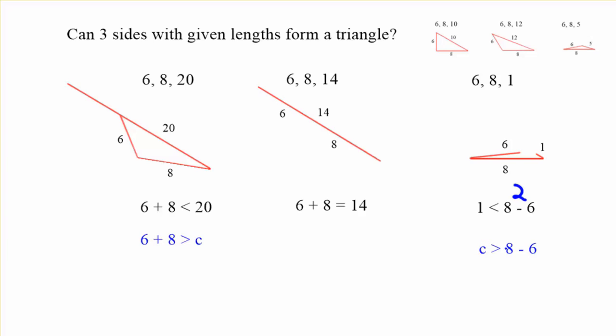So 1 is less than that. So the third side must be greater than the difference of the two other sides. And we can see that that is true for the ones that work. 10 is greater than 2. 12 is greater than 2. And the 5 is greater than 2. That's why that little one works.